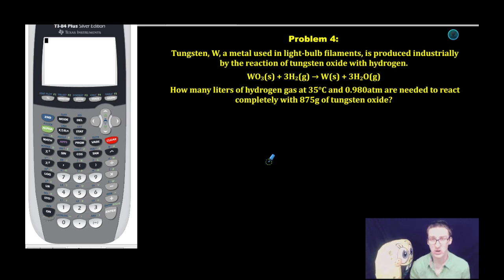We're given an equation that's already balanced. Yes! How many liters of hydrogen gas at 35 degrees Celsius and 0.980 atmospheres are needed to react completely with 875 grams of tungsten oxide? Okay, so this is definitely your most complex gas stoichiometry problem that you're going to see.